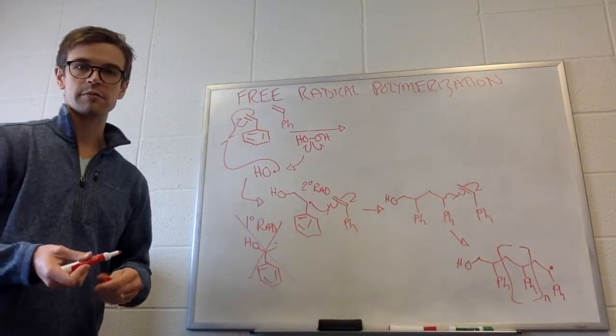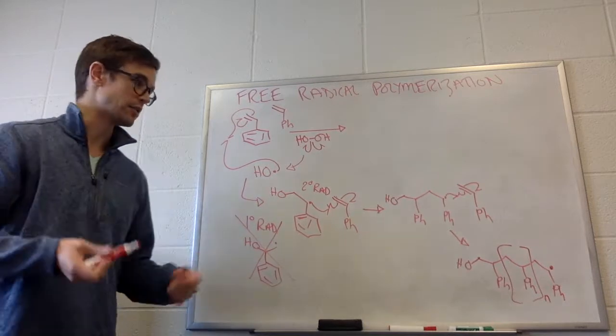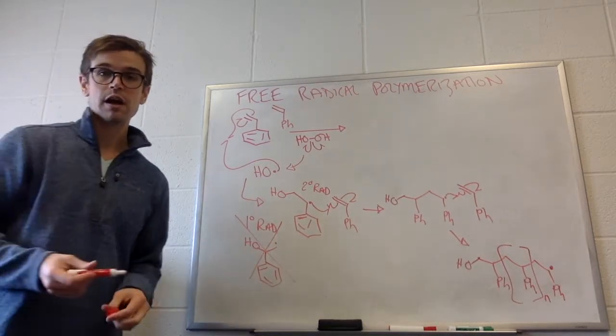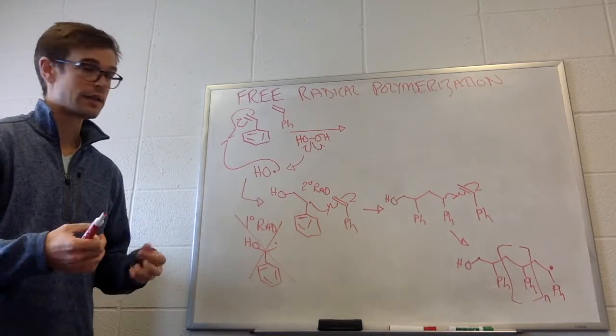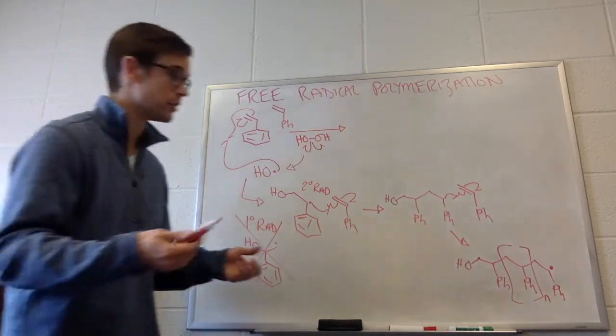So this unit is going to repeat many, many times. So n could mean a thousand, n could mean a hundred, n could mean ten thousand, n could mean a million. It's all going to be dependent on how the reactions run, how much of the monomer is in there, what the concentration is, those types of factors.